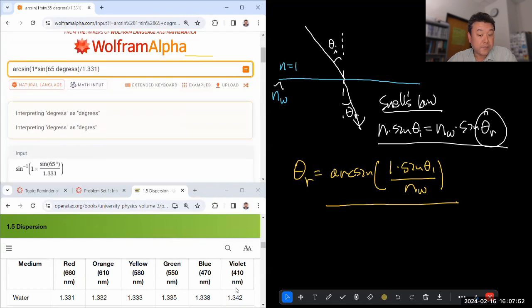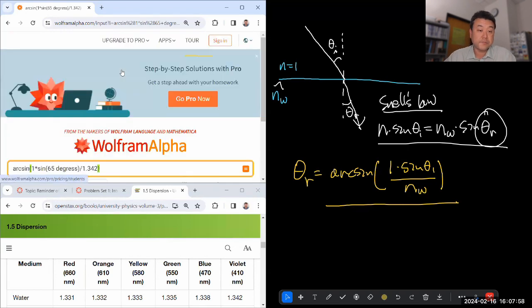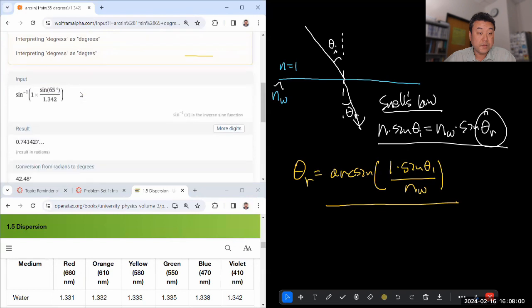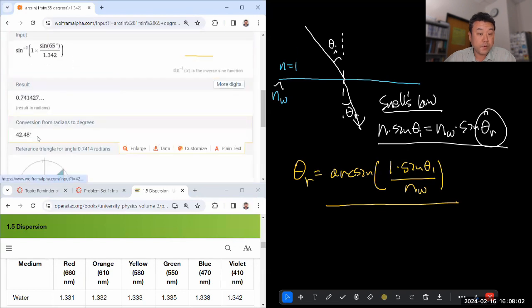Let me do the calculation again for violet. Everything stays the same except for the index of refraction, which is now 1.342. And with that, we get 42.48.